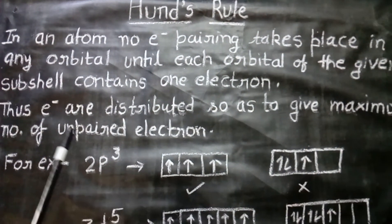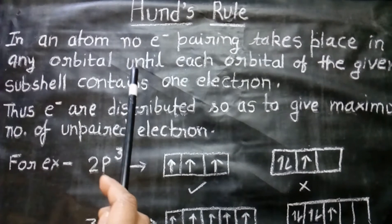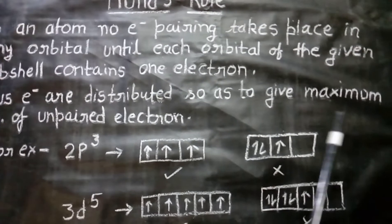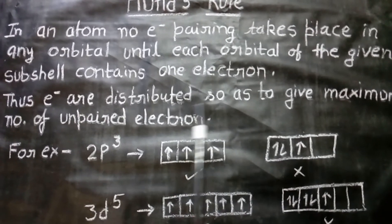According to this rule, in an atom, no electron pairing takes place in any orbital until each orbital of the given sub-shell contains one electron.